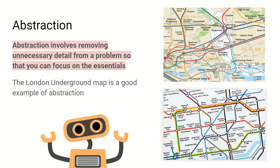You can see rivers, you can see some green spaces, you can see some roads and you can even see some names which you don't need to know. When you apply abstraction to this, all you do is focus on the core essentials: where the stations are, where the lines are and where they're connected. This allows us to interact with the London Underground in the most efficient way possible.